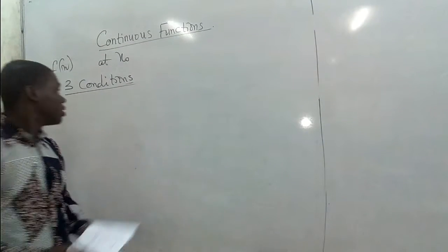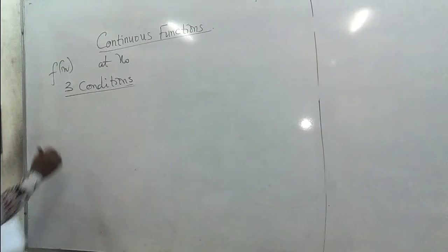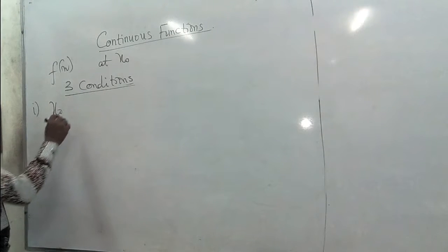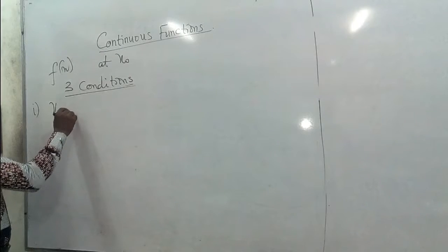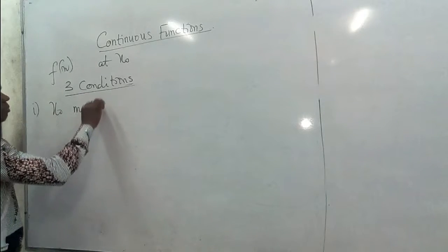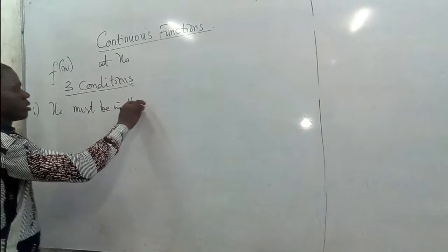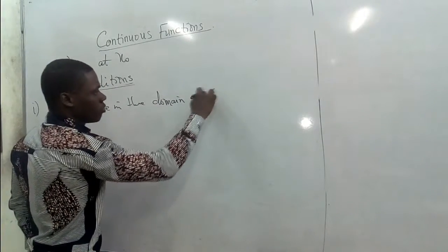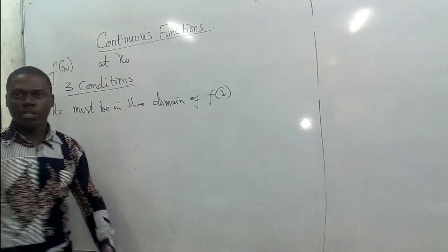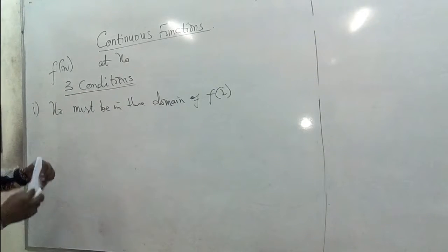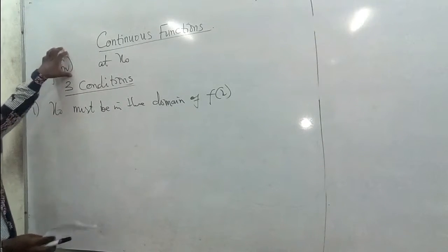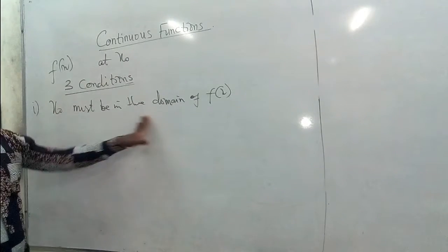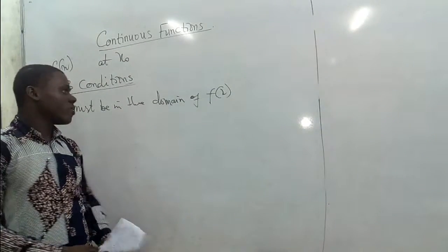Theoretically, the first condition is that X naught should be in the domain of F of X. So if this function is continuous at X naught, then X naught must be found in the domain of F of X.